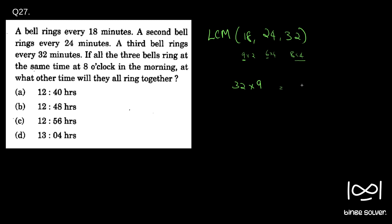So 32 into 9 is 288. So 288 minutes — if you convert this into hours, divide 288 by 60: 4 gives 240, so that is 4 hours and then 288 minus 240 is 48 minutes.